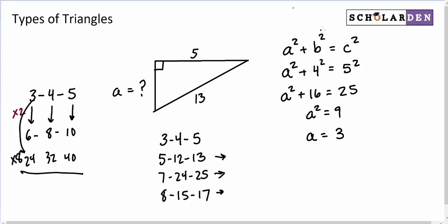You would just know, oh, 5, 12, 13 is a Pythagorean triple. This has to be 12.